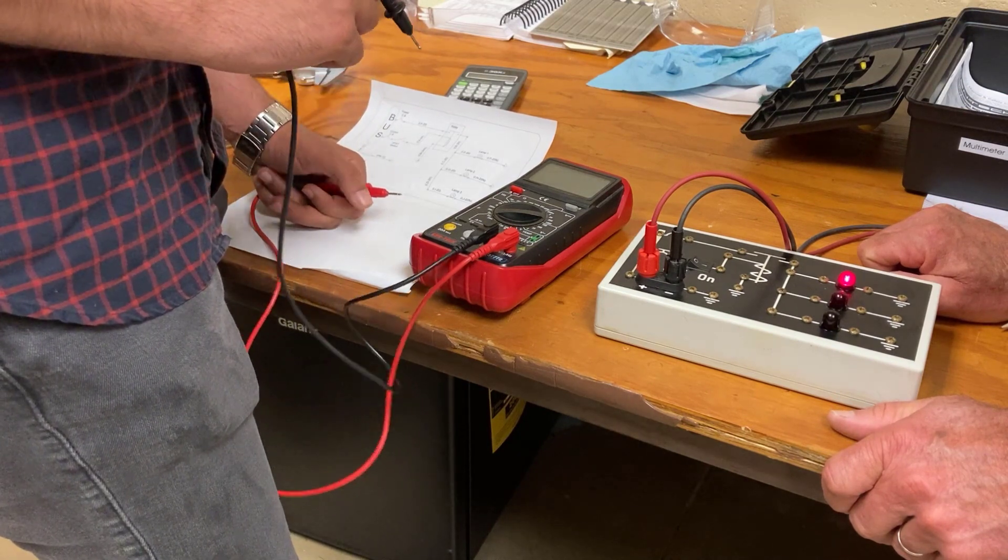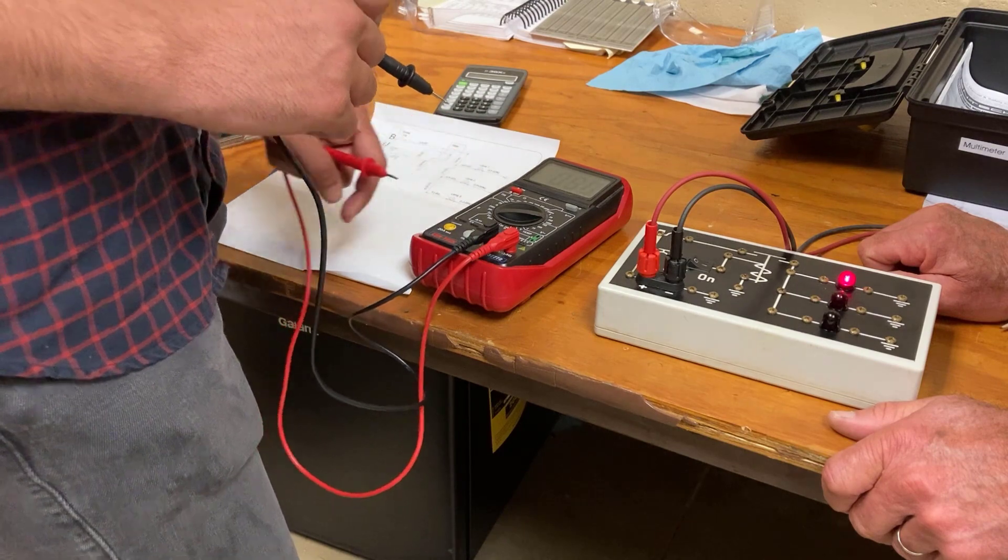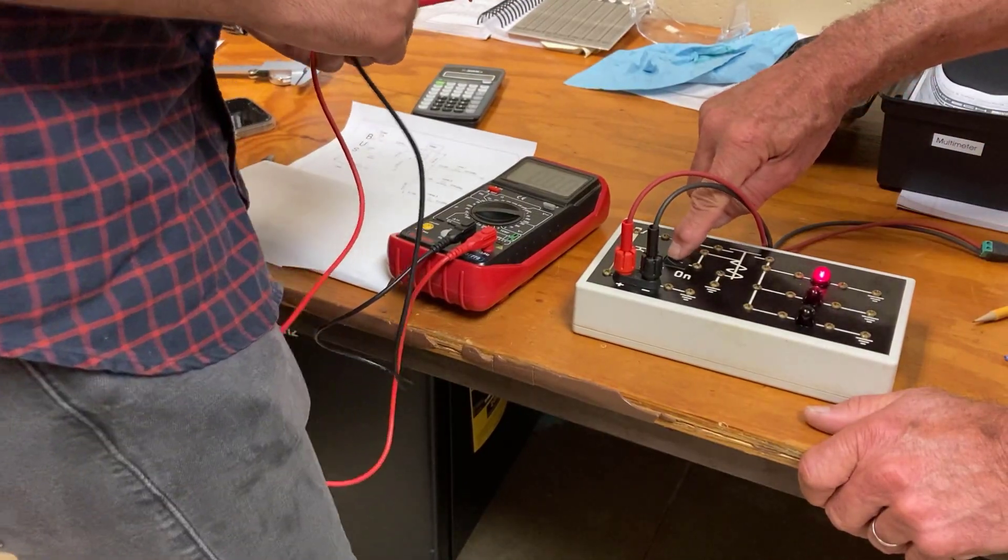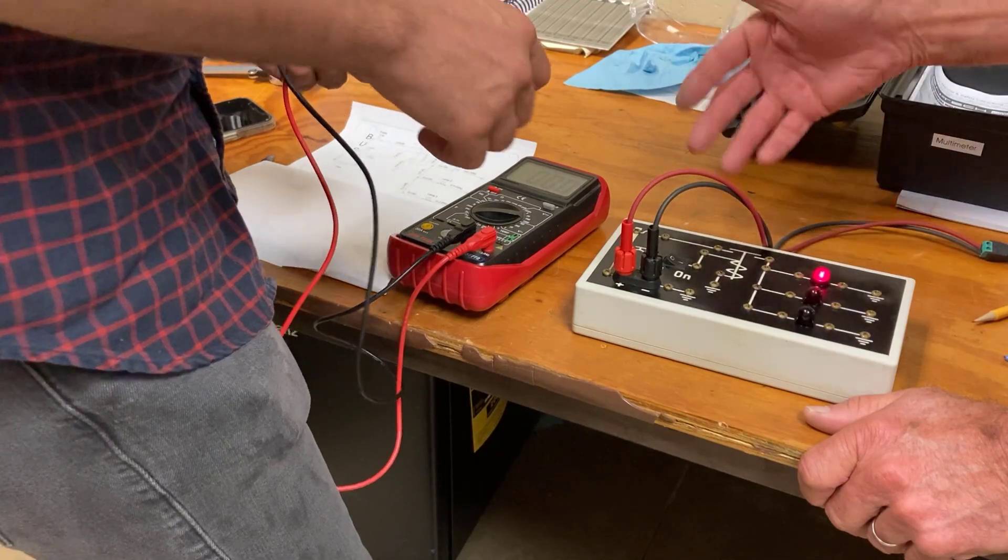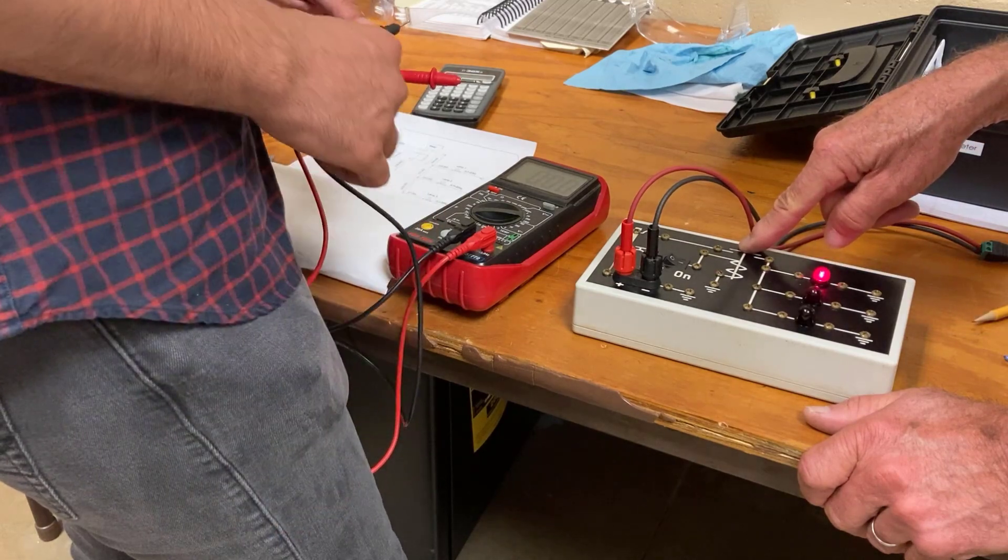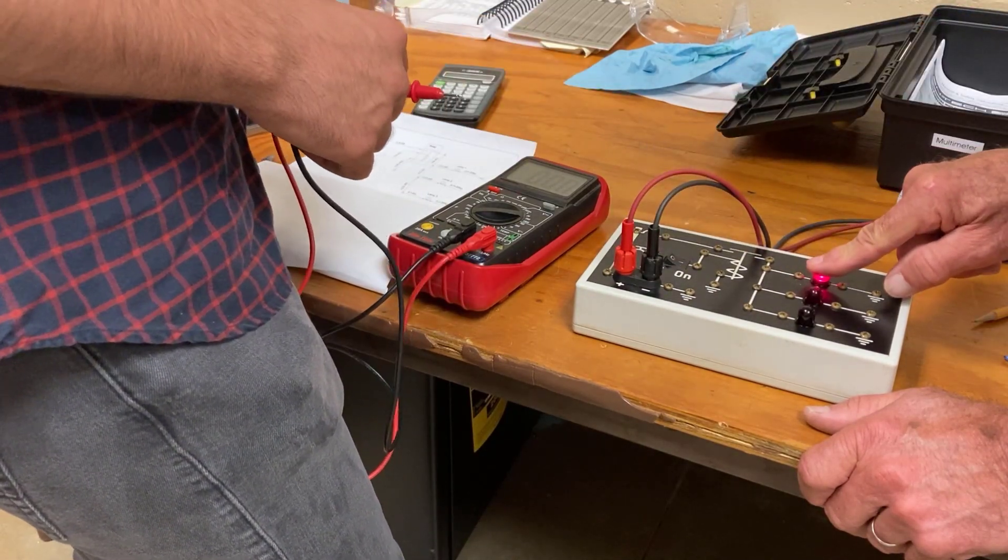So you want to use just some sort of logic to figure out where do you think the problem is. Could the problem be with this switch? Well no, because this is coming on. Could the problem be with the relay? No, because the relay has to work to turn this light on.